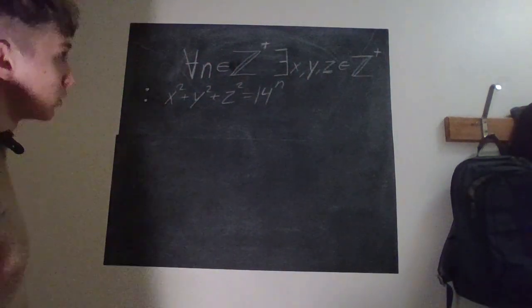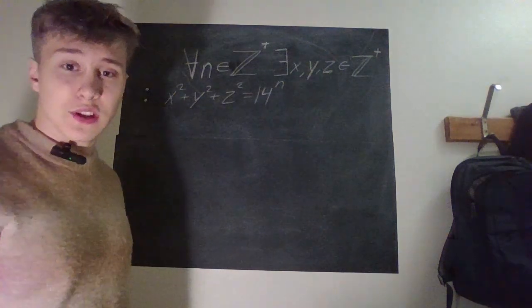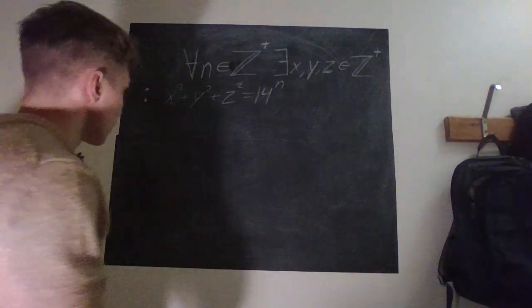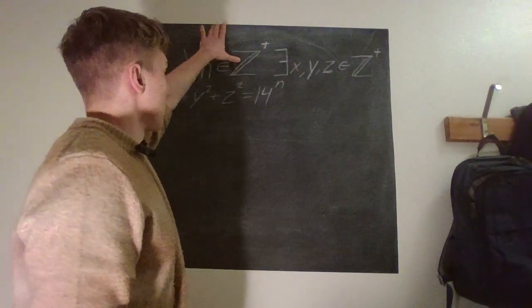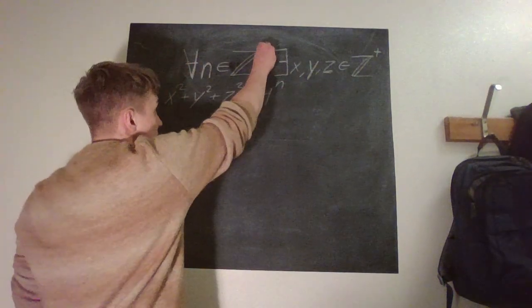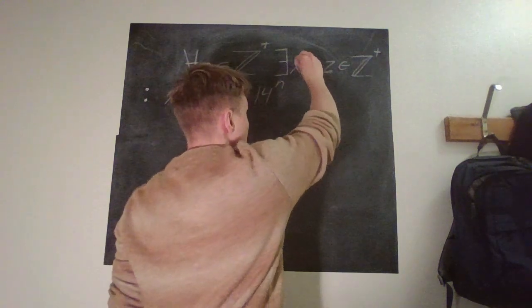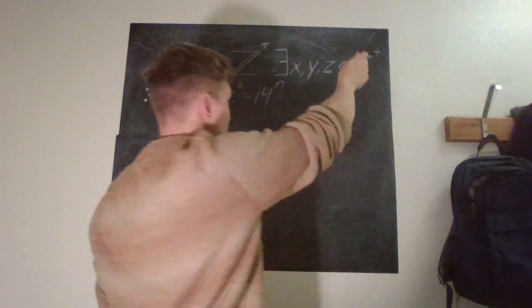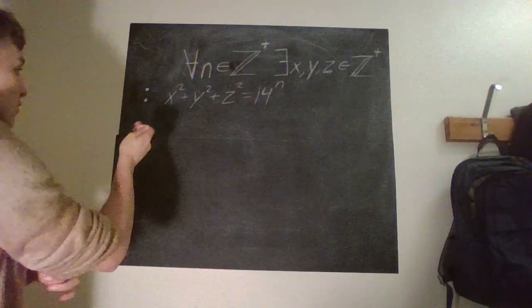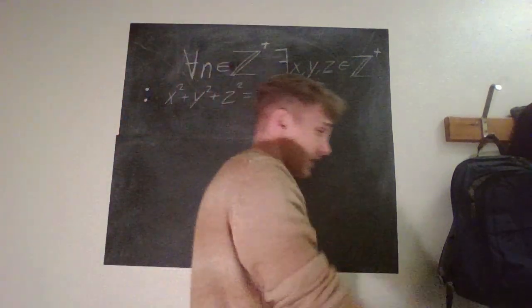Hello everyone, today we've got a bit of a problem. If this looks like complete gibberish to you, what's standing behind me — good, you're in the right place. So what does this mean? This means that for every n in the positive integers, there exists a triple x, y, and z in the positive integers — including zero — such that x squared plus y squared plus z squared is equal to 14 to the power of n. How do we prove this?